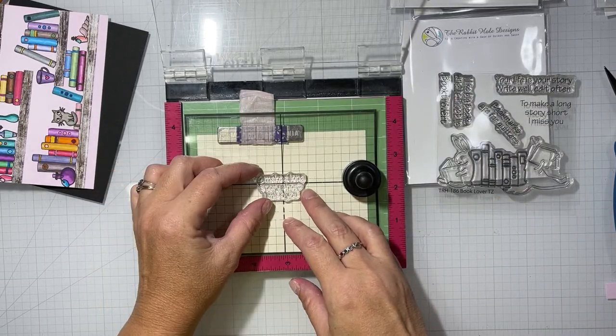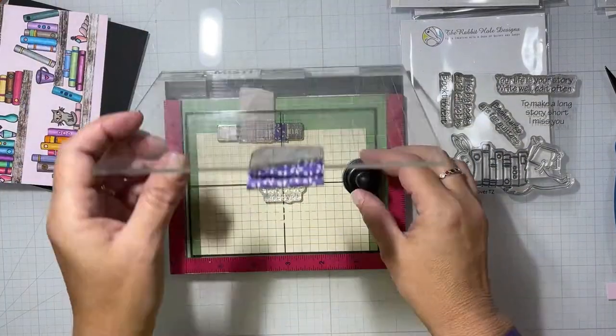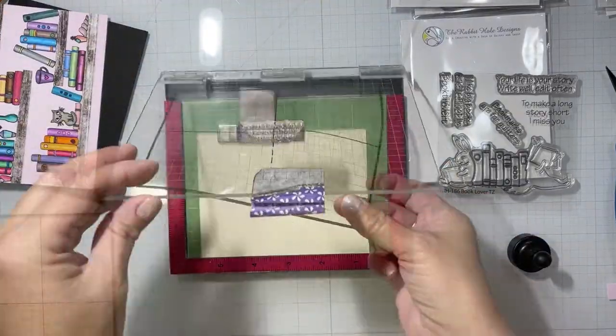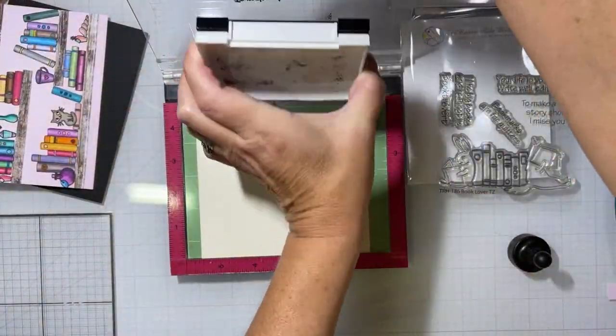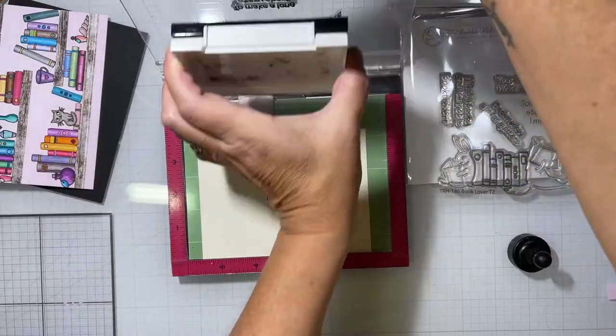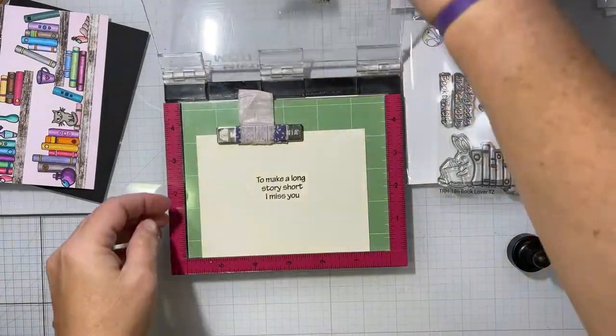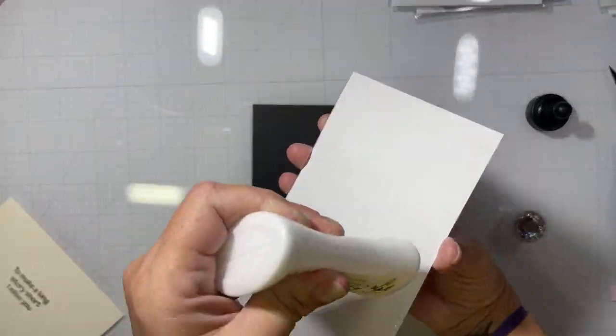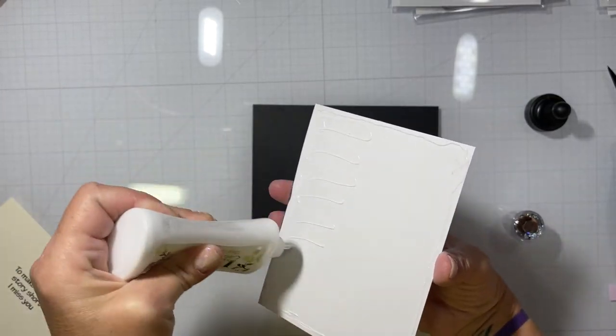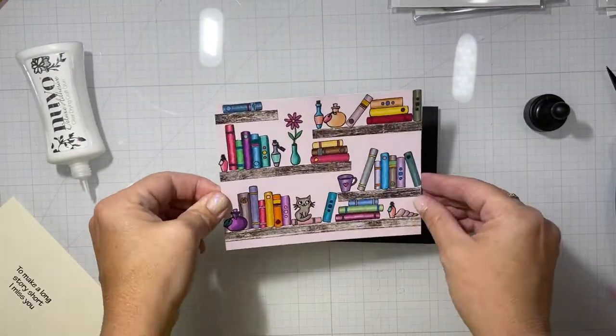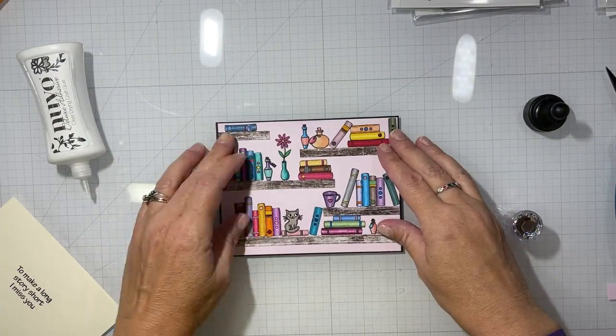And then we have our sentiment for the inside. I do not as usual remember what I picked. To make a long story short, I miss you. That's what I chose. And I used cream colored paper for the inside card stock, instead of white, which is my usual go to color. Then I adhered my front panel to a black card base.